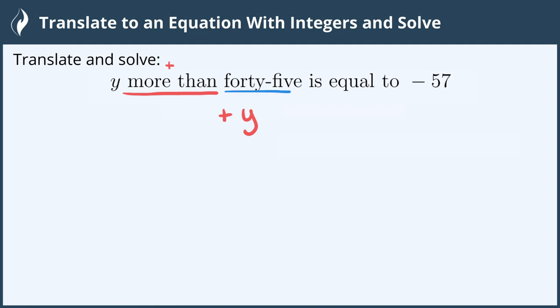So 45 actually goes at the beginning of this. We get 45 plus y. Now we translate 'is equal to' with an equal sign and finish it with negative 57.